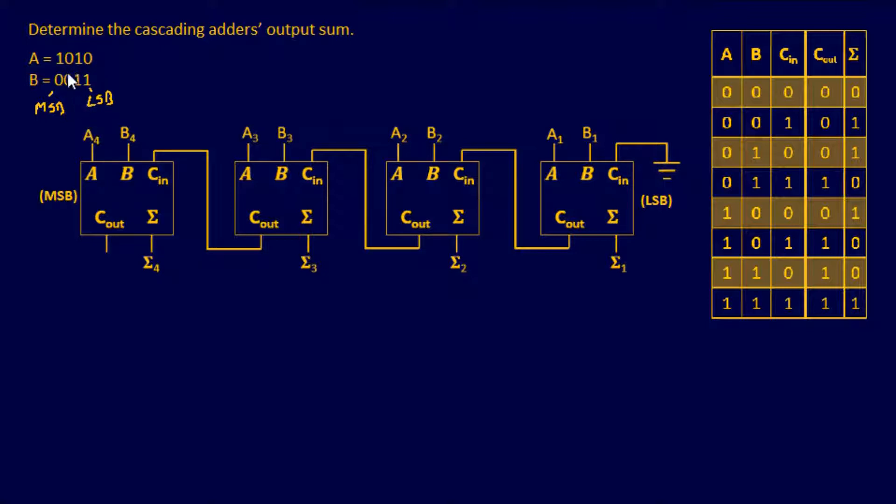Let's do A for starters. A is 1, 0, 1, 0. So it's 1, 0, 1, 0. Same thing for B, 0, 0, 1, 1.